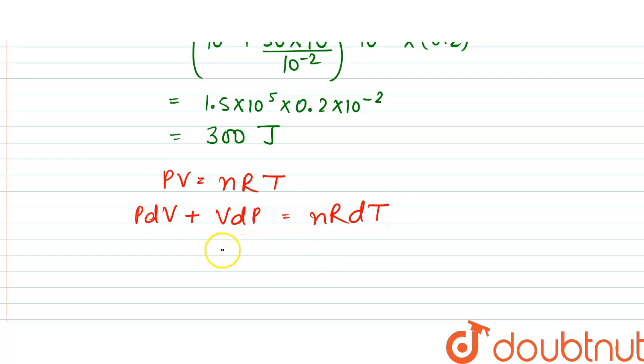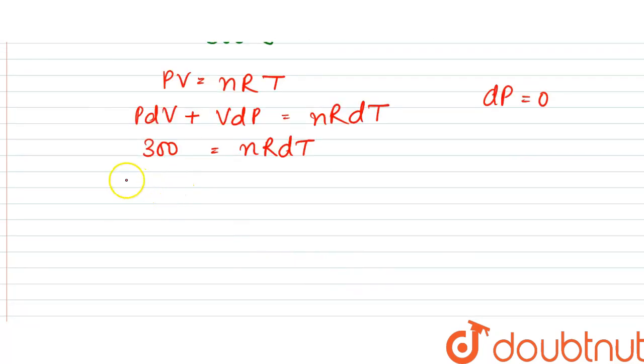P dV is given as 300. Since there is no change in pressure, dP is zero, so this would be 300 equals nR dT. From here, dT can be written as 300 by nR.